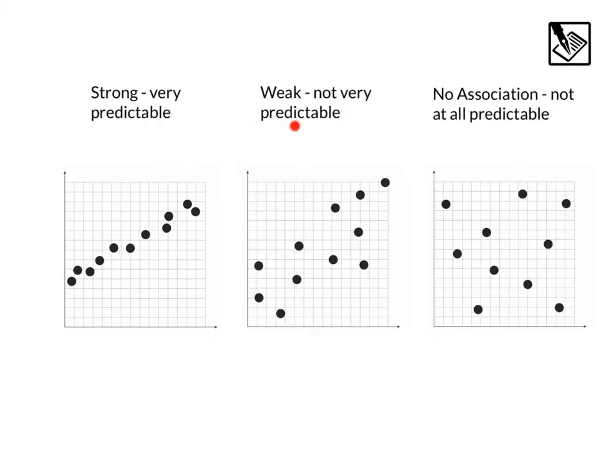Associations can also be strong, weak, or not existent at all. A strong association is very predictable. We can see that these dots are close to one another, and we can kind of predict where the next dots are going to be.